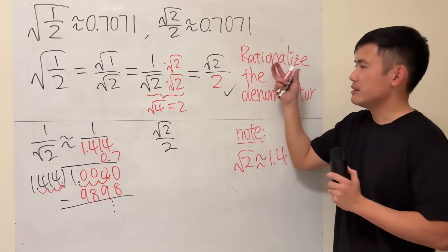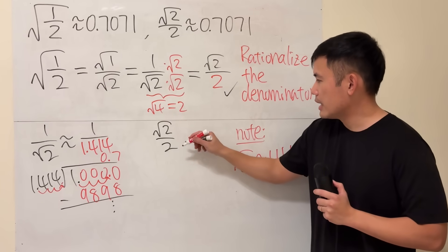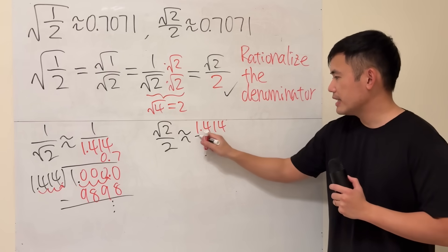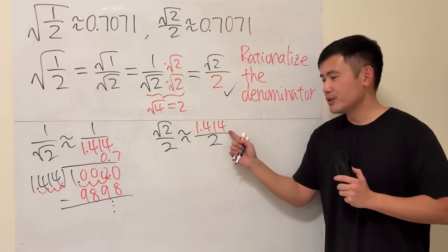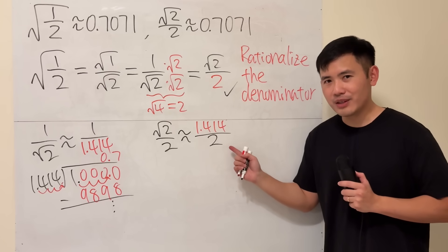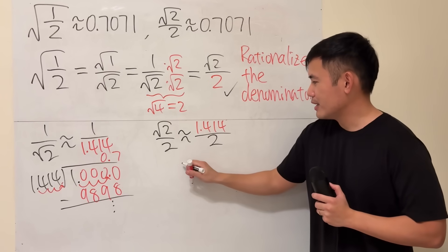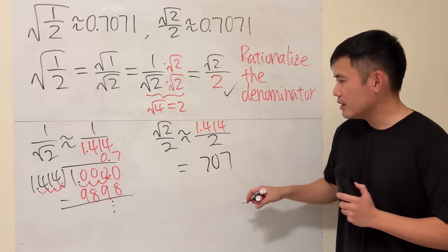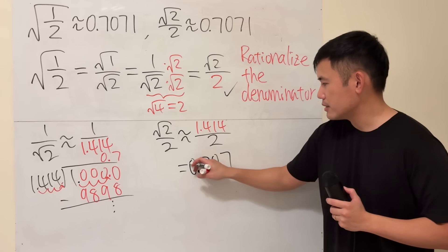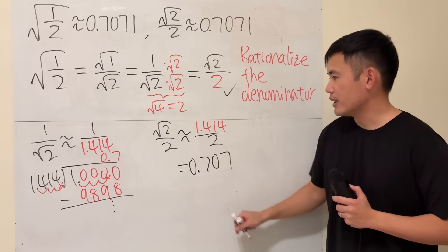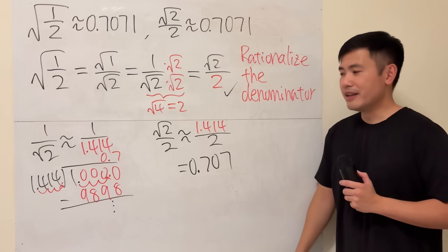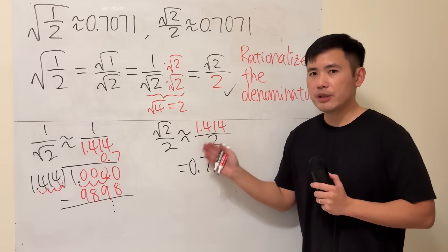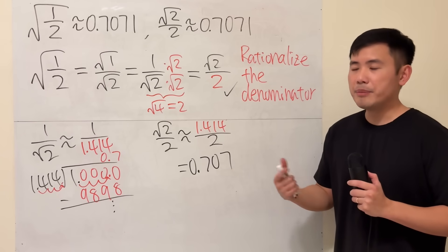However, if you did this procedure — called rationalizing the denominator — check this out. This is now approximately 1.414 divided by two. How do you work this out? I think many of you can do this in your head. Just think about it as: if you have $1,414 divided by two, you will have 707, and now just put the decimal point here. So the answer is 0.707. This is approximately equal to that. As you can see, if we have a rational number — just like a regular number like the two here — it's much easier to go through the division process.